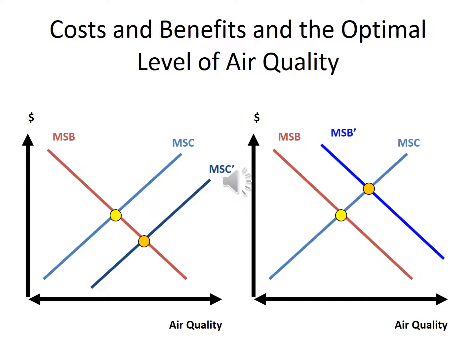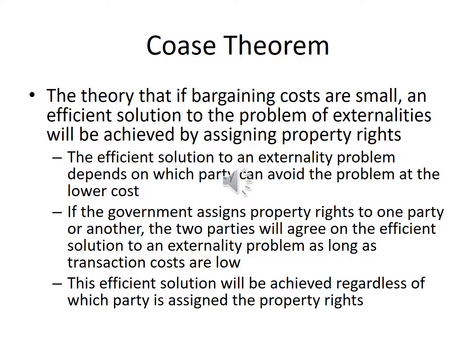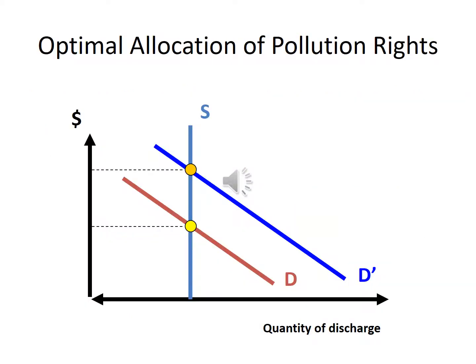Figures show costs and benefits and the optimal level of air quality. Coase Theorem: the theory that if bargaining costs are small, an efficient solution to the problem of externalities will be achieved by assigning property rights. The efficient solution to an externality problem depends on which party can avoid the problem at the lower cost. If the government assigns property rights to one party or another, the two parties will agree on the efficient solution as long as transaction costs are low. This efficient solution will be achieved regardless of which party is assigned the property rights. The figure shows optimal allocation of pollution rights.